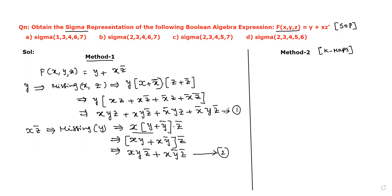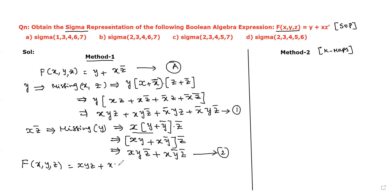Now we substitute expression 1 and expression 2 into the given Boolean function. Substituting in place of y and xz', f(x,y,z) becomes: xyz + xyz' + x'yz + x'yz' + xyz' + xy'z'.